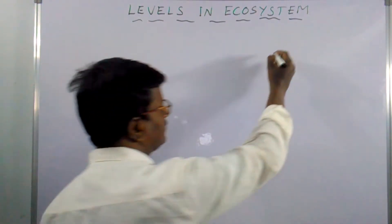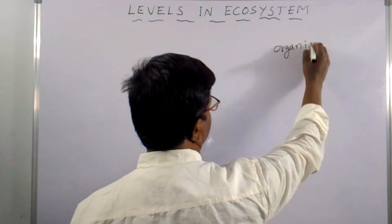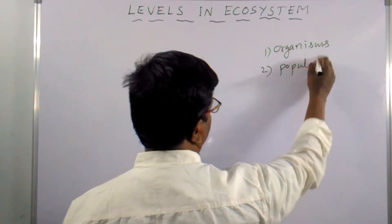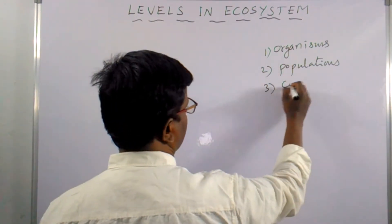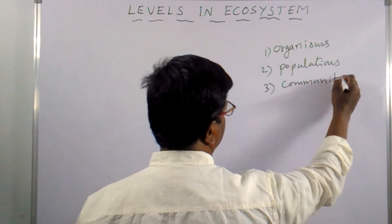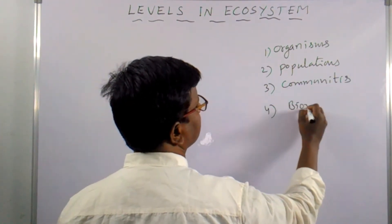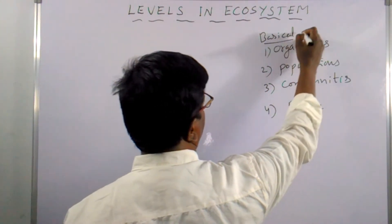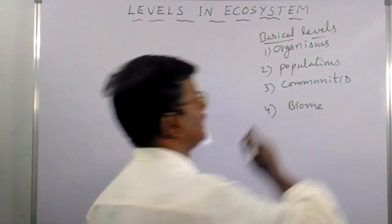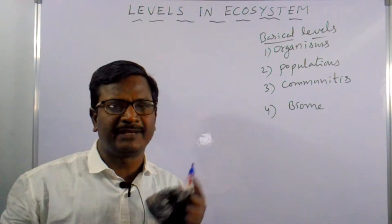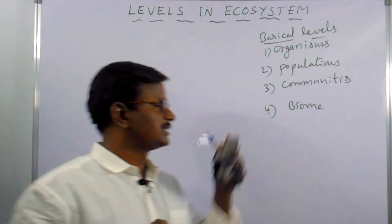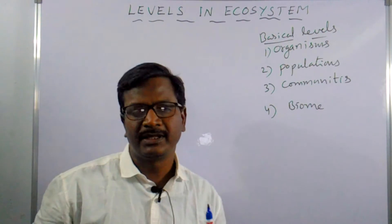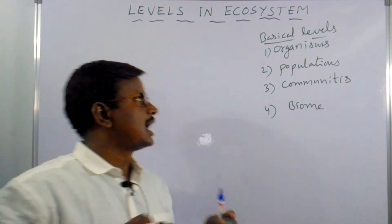There are four basic levels in ecology. The first one is organisms, the second one is populations, the third one is communities, and the fourth one is biome. These are the four basic levels.